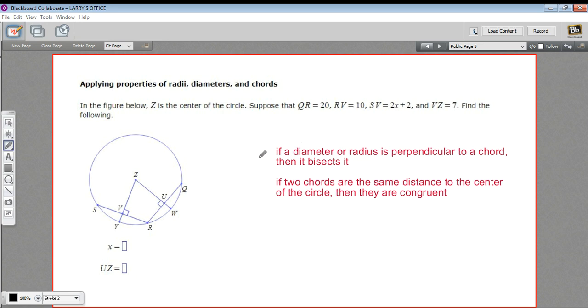The two essential facts that we need to apply here, one is that if a diameter or radius is perpendicular to a chord, so you can see here we've got these 90-degree angles where a radius cuts through this chord. When that happens, it cuts the chord in half. It bisects the chord. So this side is equal to this side, and same over here.